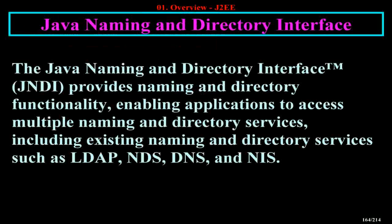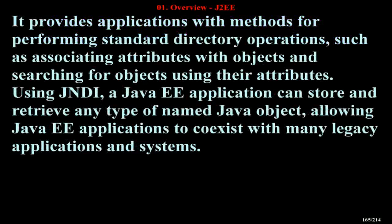The Java Naming and Directory Interface (JNDI) provides naming and directory functionality, enabling applications to access multiple naming and directory services, including existing naming and directory services such as LDAP, NDS, DNS, and NIS. It provides applications with methods for performing standard directory operations, such as associating attributes with objects and searching for objects using their attributes. Using JNDI, a Java EE application can store and retrieve any type of named Java object, allowing Java EE applications to coexist with many legacy applications and systems.